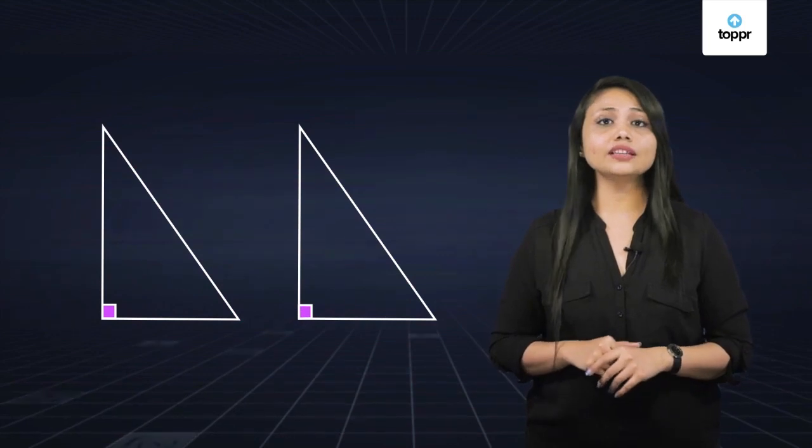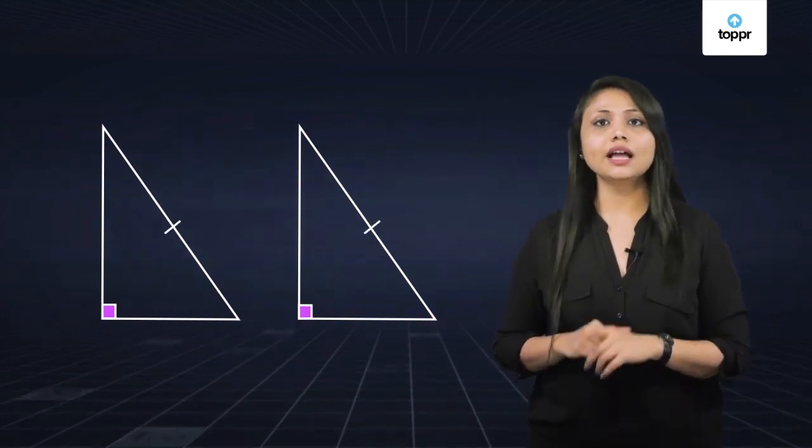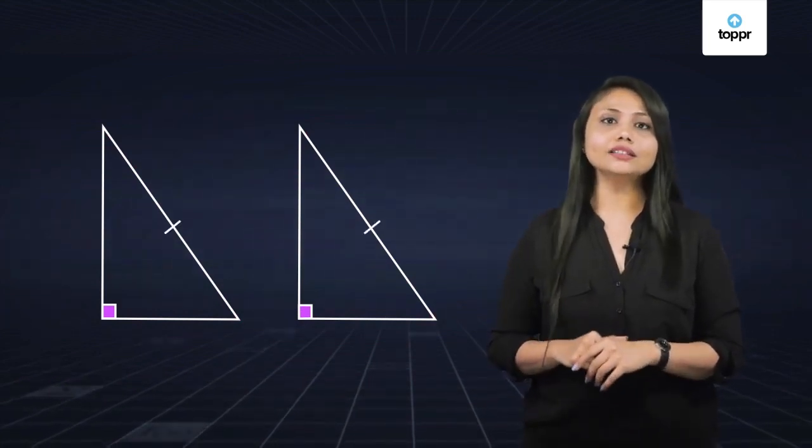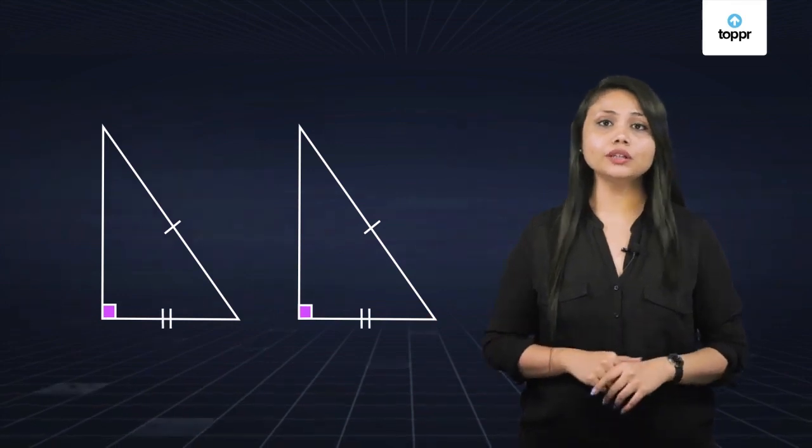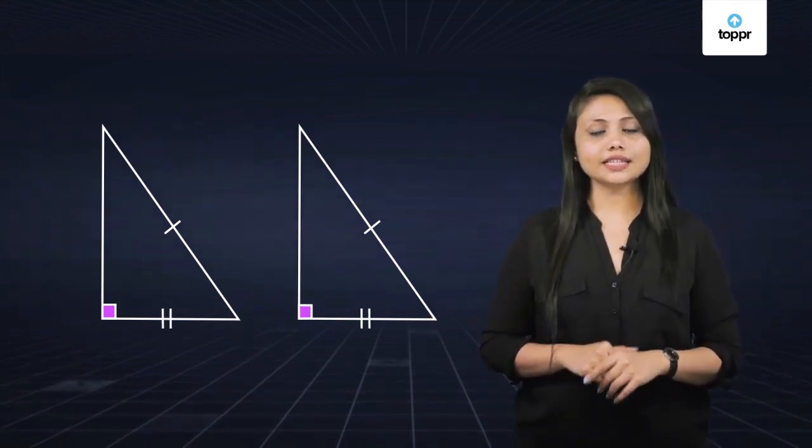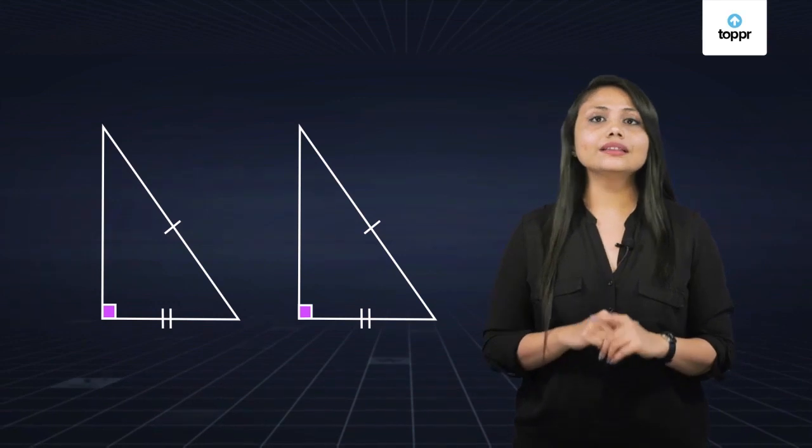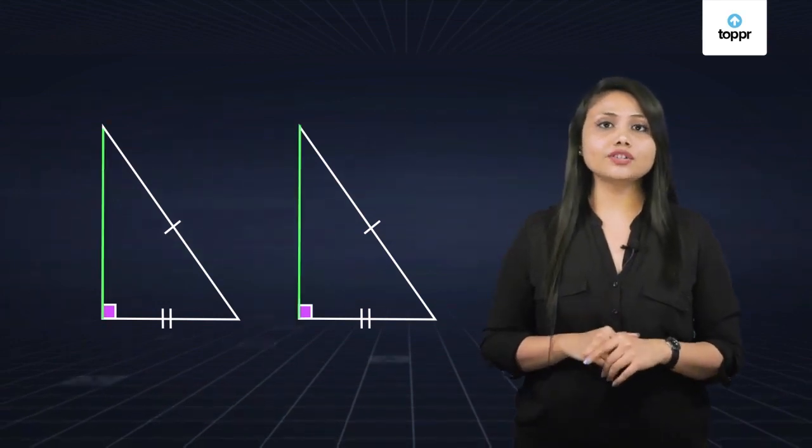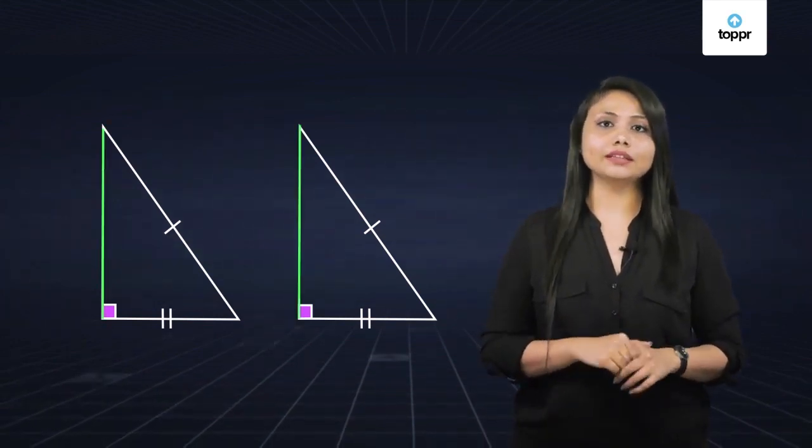If we have two right triangles such that the hypotenuses are equal and one pair of sides other than the hypotenuse is also equal, then the two right triangles are said to be congruent. This is because the third side of the right triangle will also be equal by the Pythagoras theorem. And this rule is called the Right Angle Hypotenuse Side, or RHS test of congruence.